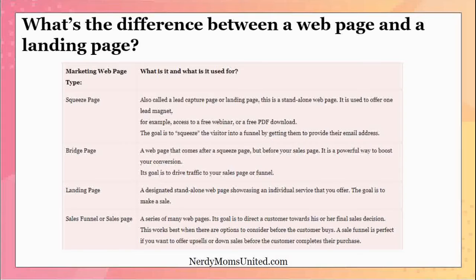With a sales funnel or sales page, this is a more robust version of the other three. It can encompass those three items plus more because it has multiple web pages. Its goal is to bring your customer through a journey to bring them to the final sales decision. This works best when there are options or features they need to consider before buying so the user is well informed before they make the final purchase. This is perfect if you want to offer an upsell or downsell to the main product so they can complete their buying experience.